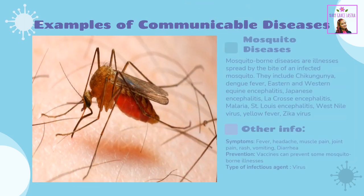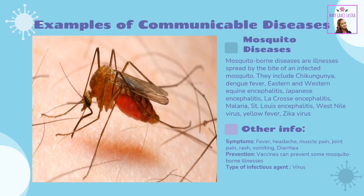Mosquito-borne diseases are illnesses spread by the bite of an infected mosquito. They include Chikungunya, Dengue Fever, Eastern and Western Equine Encephalitis, Japanese Encephalitis, La Crosse Encephalitis, Malaria, St. Louis Encephalitis, West Nile Virus, Yellow Fever, and Zika Virus. Symptoms include fever, headache, muscle pain, joint pain, rash, vomiting, and diarrhea. Vaccines can prevent some mosquito-borne illnesses. Type of infectious agent: Virus.